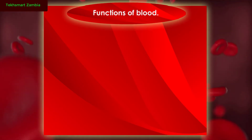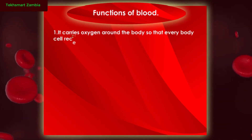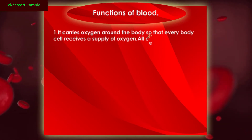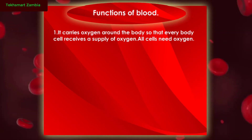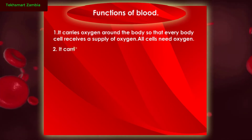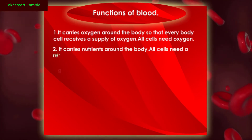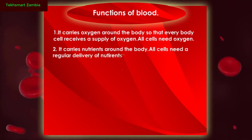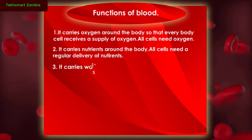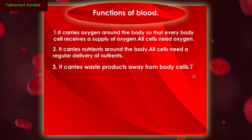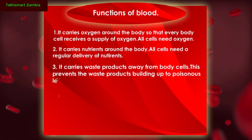Functions of blood. One: it carries oxygen around the body so that every body cell receives a supply of oxygen — all cells need oxygen. Two: it carries nutrients around the body — all cells need a regular delivery of nutrients. Three: it carries waste products away from body cells, which prevents waste products from building up to poisonous levels.